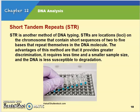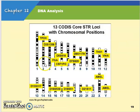The next method is STR — short tandem repeats — another method of DNA typing. STRs are locations on the chromosome, referred to as loci, that contain short sequences of two to five bases that repeat themselves in the DNA molecule. This method is advantageous because it provides greater discrimination, requires less time and a smaller sample size, and the DNA is less susceptible to degradation. Here's an example showing STR loci and their chromosomal positions.